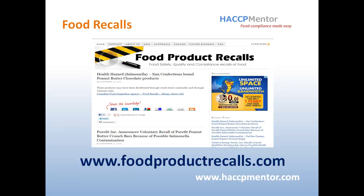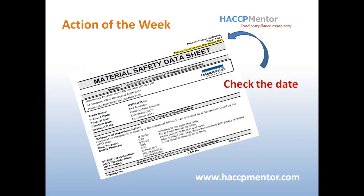Let's have a look at our action of the week. This week I'd like you to go and check your chemical material safety data sheets and to see that they're current. As a general rule, MSDSs should be within five years of their document date. This really is a no-brainer if you want to reduce the amount of corrective action requests you get in any third-party audit to any of the GFSI standards or by your local food safety requirements. Quite easy — just make sure they're in date.